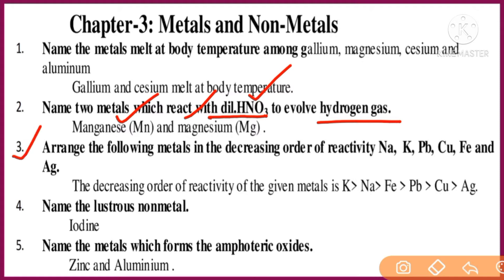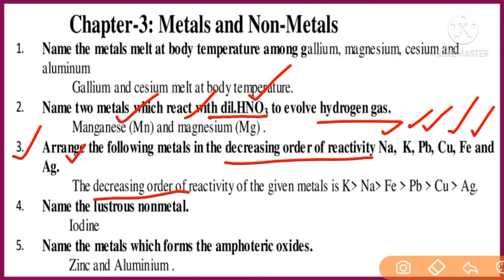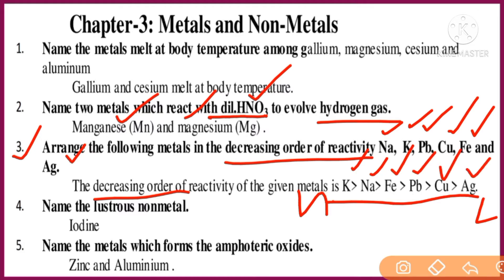Question number three: Arrange the following metals in decreasing order of reactivity — sodium, potassium, lead, copper, iron, and silver. This is based on the reactivity series. Decreasing order means from high to low: potassium, then sodium, iron, lead, copper, and finally silver. Potassium has the highest reactivity and silver has the lowest.